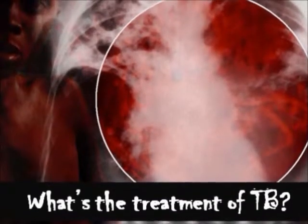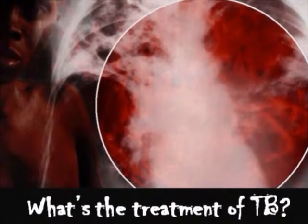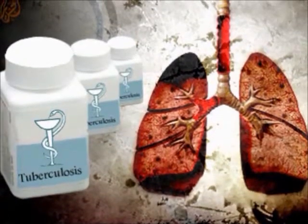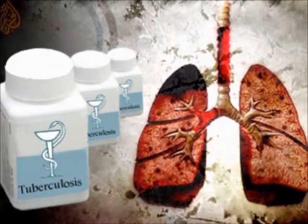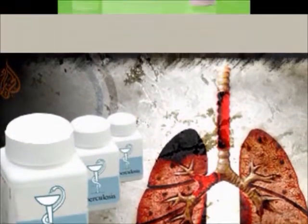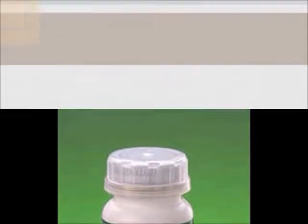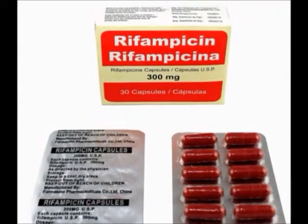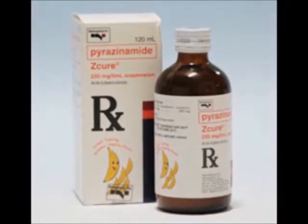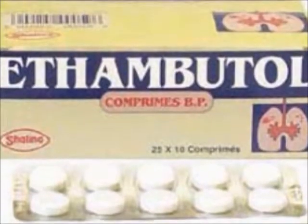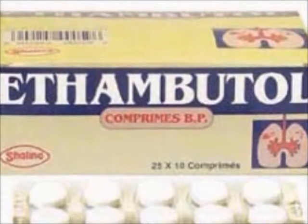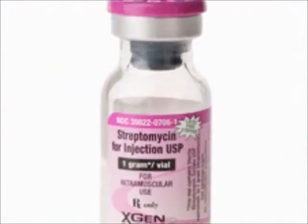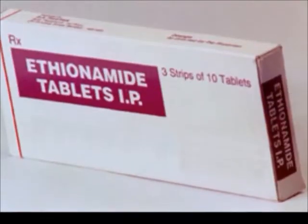What is the treatment of TB? Multi-drug therapy is used to prevent the emergence of drug-resistant mutants during the long 6-month duration of treatment. We use isoniazid and rifampicin for 6 months in the intensive and continuation phases. Also, pyrazinamide and ethambutol are used for 2 months in the intensive phase. Second-line drug therapy may include streptomycin, ciprofloxacin, and ethionamide.